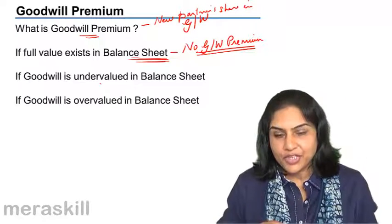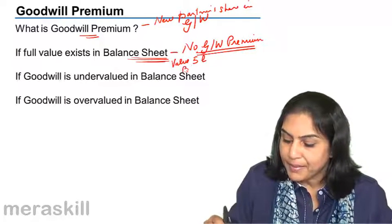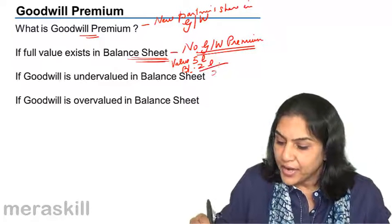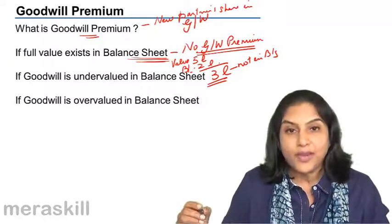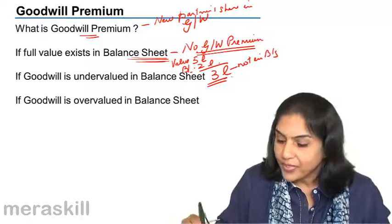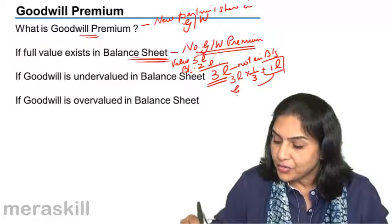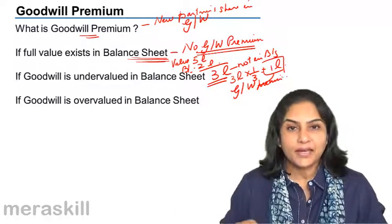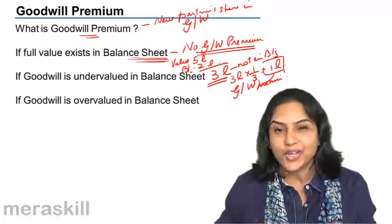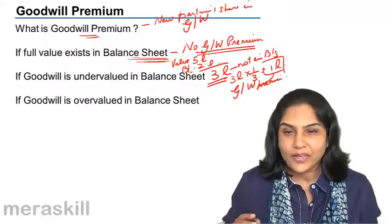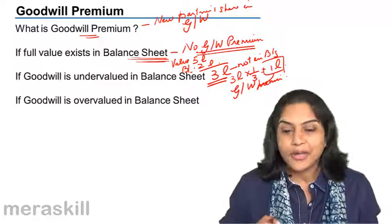But if goodwill is undervalued in the balance sheet — say the actual value is 5 lakh but in the balance sheet it is 2 lakh — then 3 lakh is not in the balance sheet. If new partner C comes in for a one-third share, then 3 lakh × 1/3 = 1 lakh is the amount of goodwill premium C must bring in. He brings in one-third of the undervalued amount — the value not shown in the balance sheet — as goodwill premium.